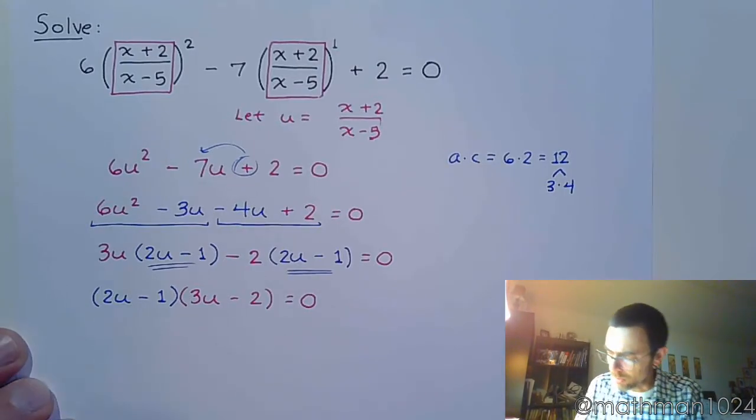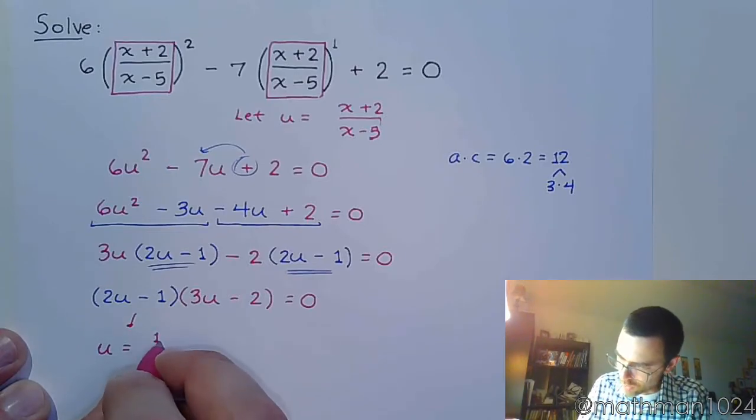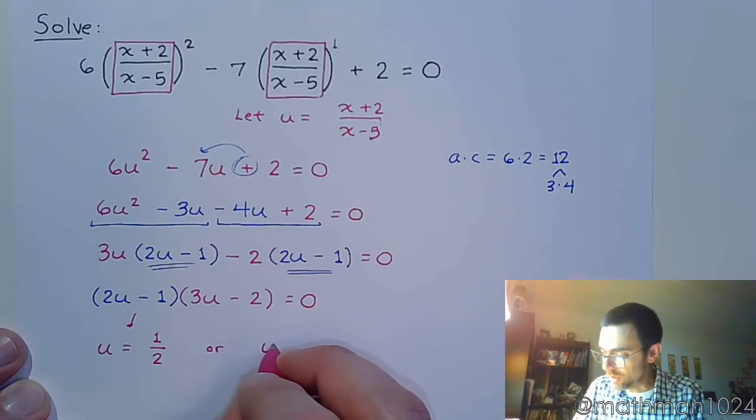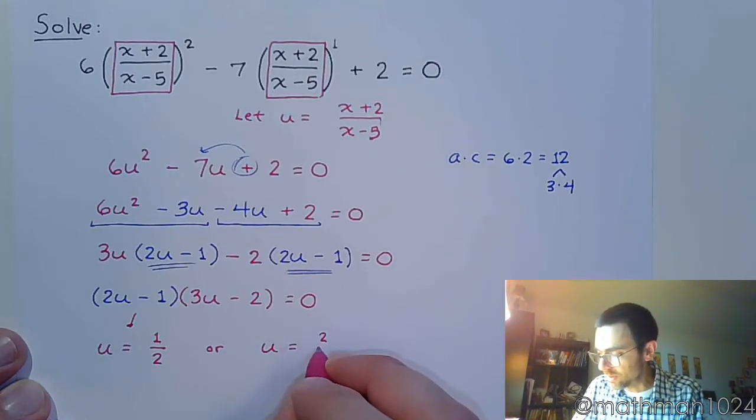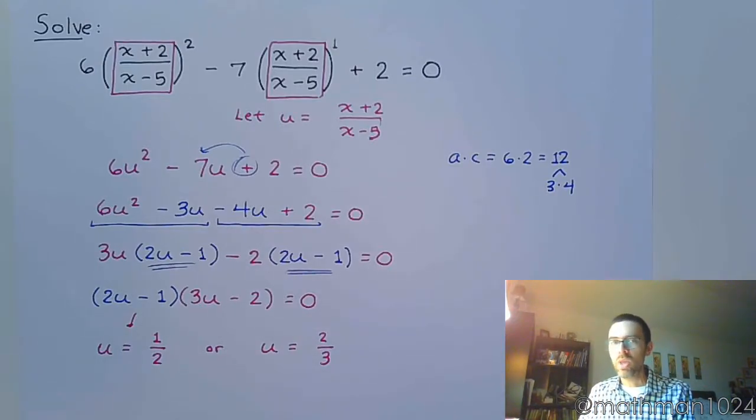From here, we're going to use that zero factor theorem, which tells me that u is going to equal positive 1 half. Or, the other factor tells me that u is equal to positive 2 thirds.